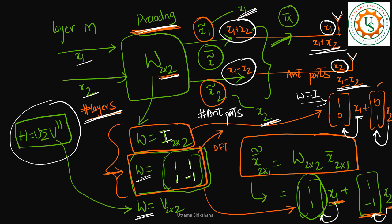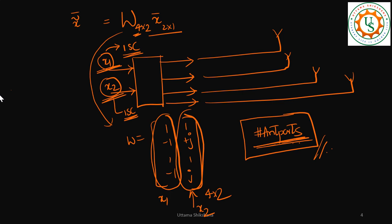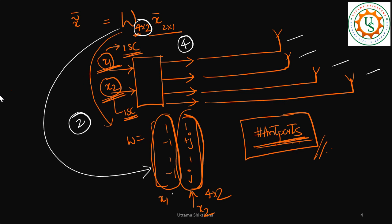Another point: the pre-coding matrices or beamforming vectors considered so far were all real-valued — for example [1, 1] and [1, -1]. But as per our processing chain we can also have complex vectors. In the next example the pre-coding matrix has dimension 4x2, meaning the number of layers at the input is 2 and the number of antenna ports at the output is 4, connected to 4 different physical antennas. The example matrix includes a complex vector such as [1, j, 1, j].